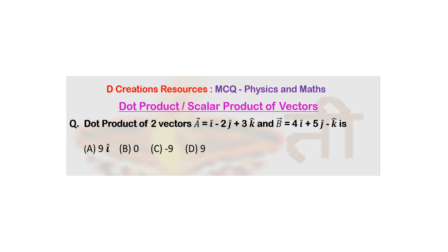So two vectors have been given to you, namely a bar which is i cap minus 2 j cap plus 3 k cap and b bar which is 4 i cap plus 5 j cap minus k cap. And you have been asked to find its dot product or scalar product and some options are given to you.